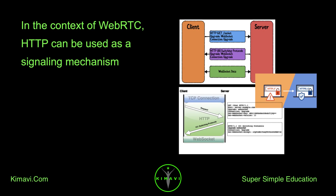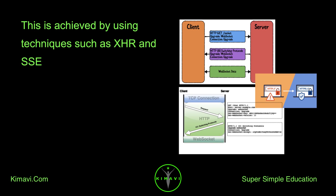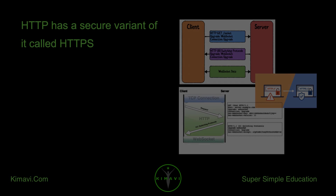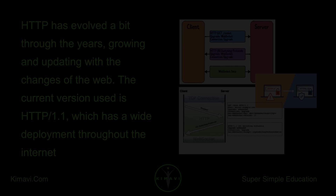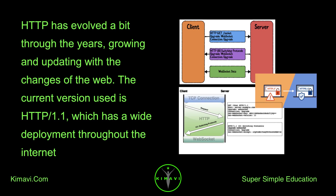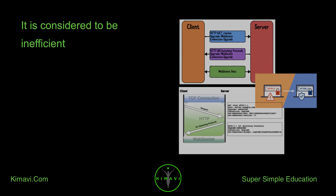In the context of WebRTC, HTTP can be used as a signaling mechanism. This is achieved by using techniques such as XHR and SSE. HTTP has a secure variant called HTTPS. HTTP has evolved through the years, growing and updating with the changes of the web. The current version used is HTTP/1.1, which has wide deployment throughout the Internet, though it is considered to be inefficient.